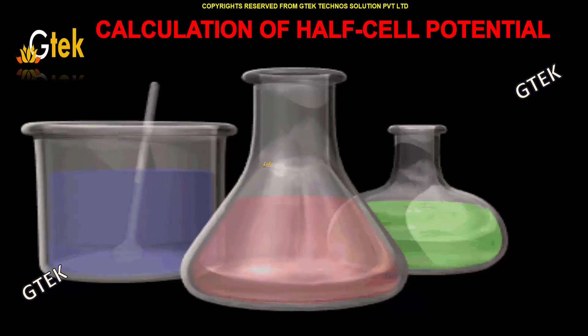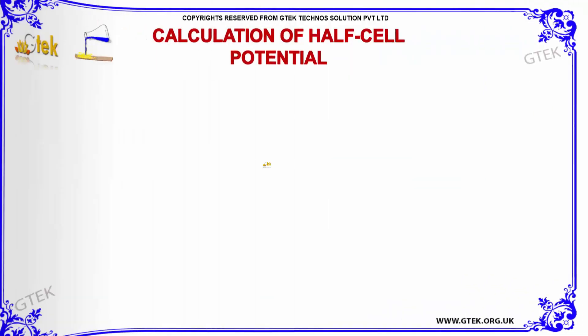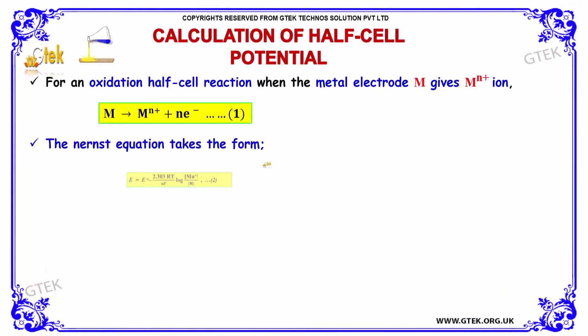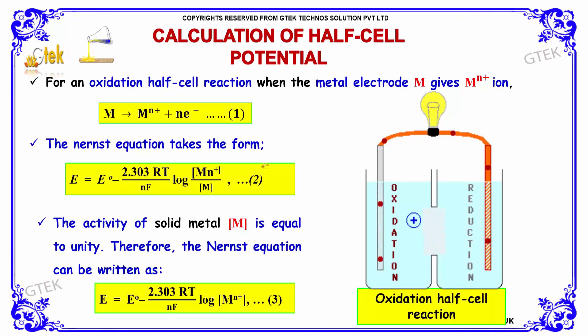Let's discuss the calculation of half cell potential. For an oxidation half cell reaction, when the metal electrode M gives Mn+ ion,